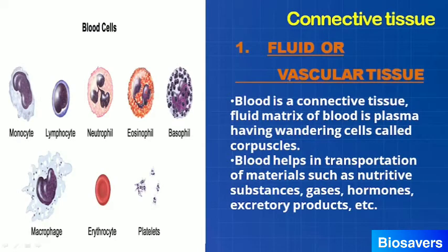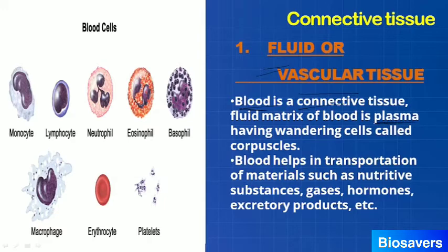The very first type of connective tissue is the fluid or vascular tissue, also called blood. So blood is a connective tissue. The matrix of blood is called plasma, which is basically a fluid material. The cells found in this plasma are called corpuscles.